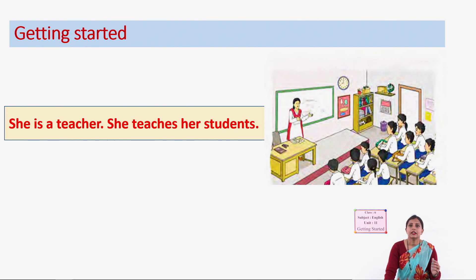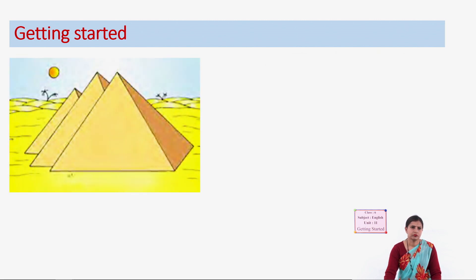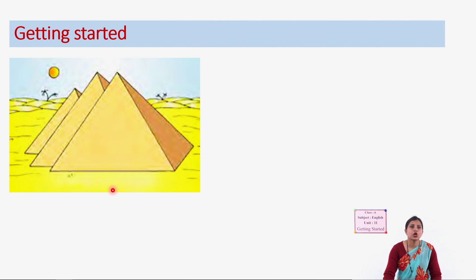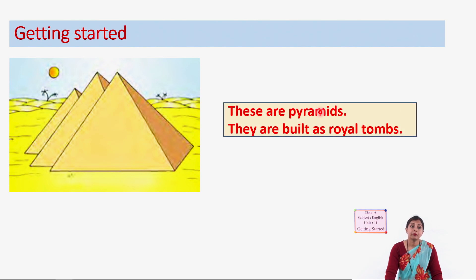So the next picture — what are these structures? Have you seen this type before? Are they triangles? Well, triangles are on paper, but here these are built as structures in a triangular shape. What are they called? They are not just triangles — they are pyramids. Yes, they are called pyramids.